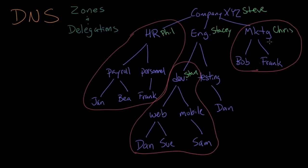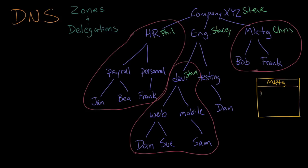Each one of these division directors is going to make a phone directory for their division. Chris is going to make one for marketing. We'll put two people in there: Bob at extension 20 and Frank at extension 22.